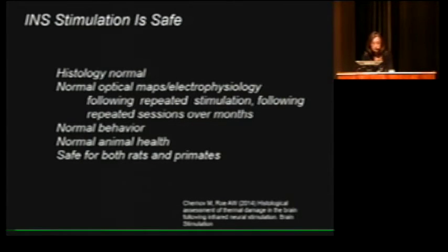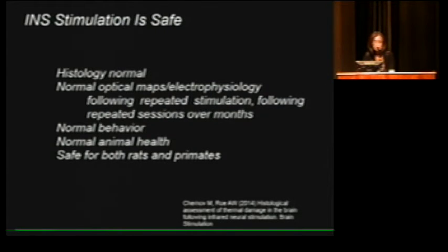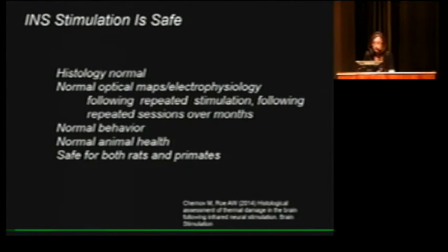One big issue that NIH funding agencies and clinicians are very interested in is whether this method is safe. Nick Chernoff and another student did a number of studies showing that histology following INS stimulation, within a range of parameters, is very safe. Using Nissl stains and cytochrome oxidase stains, the tissue looked very normal, and we know the range within which it starts to induce lesions. Following many sessions of electrophysiology and optical imaging, the responses remain normal. We can do repeated stimulation — hundreds of trials per session, multiple sessions twice per week across months — and the animal's behavior and health are normal. For primates, this technique seems quite safe and effective.